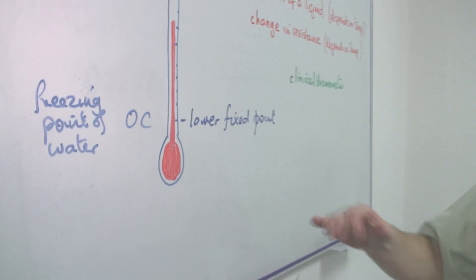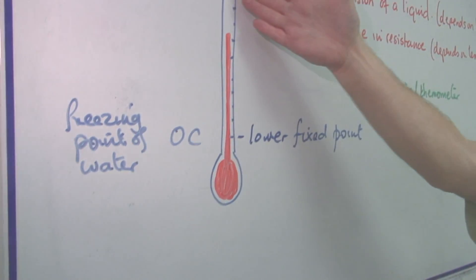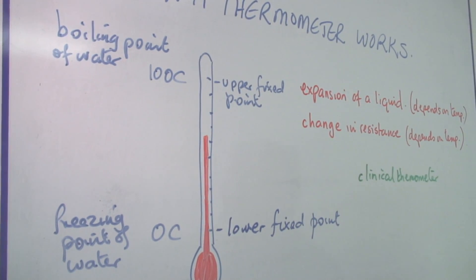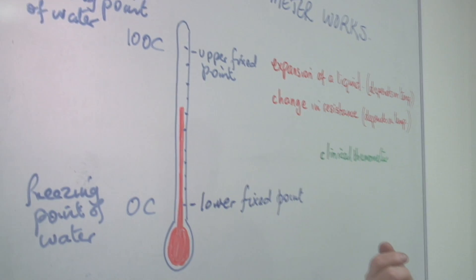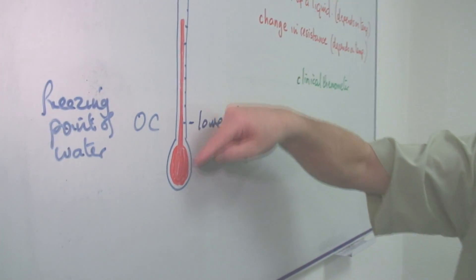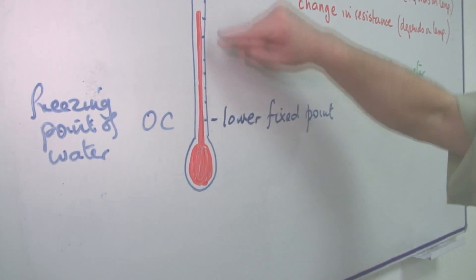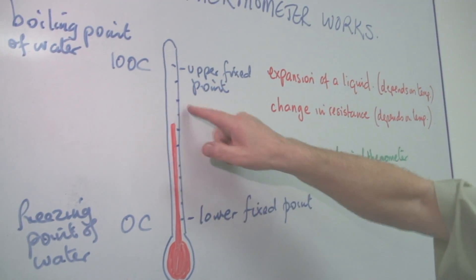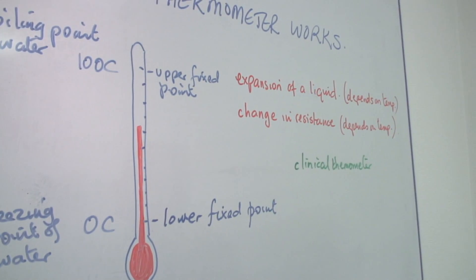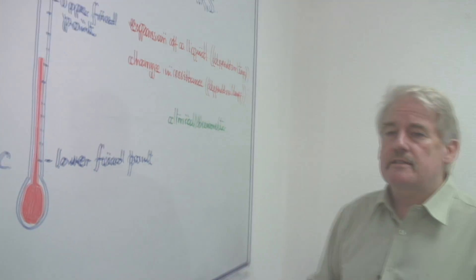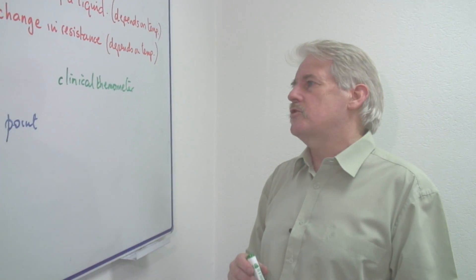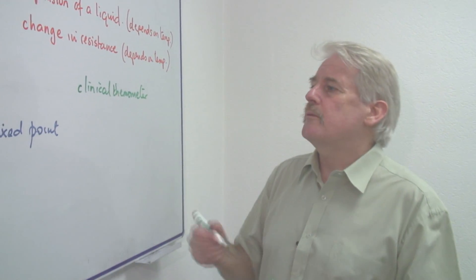And what happens is as it expands, it goes up to the reading of body temperature, and then when you remove it from the body, the thread breaks and it leaves some of the liquid in the thermometer tube at the top so that you can read the actual reading. It's a special device. That's why you have to shake it to get the liquid to go back into one place at the bottom. That's a clinical thermometer.